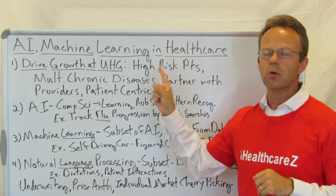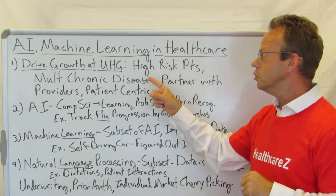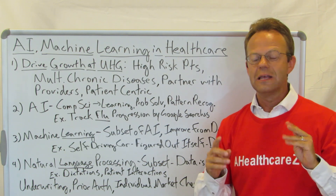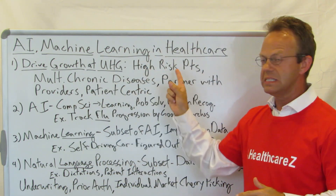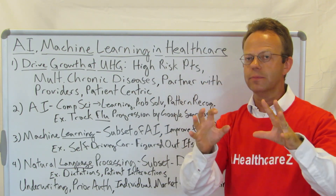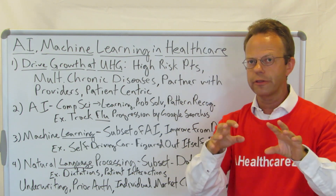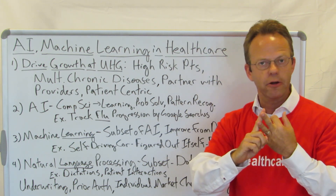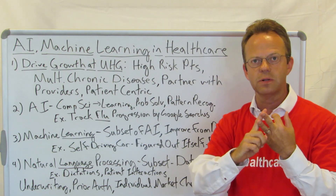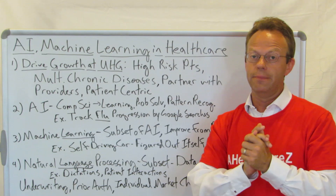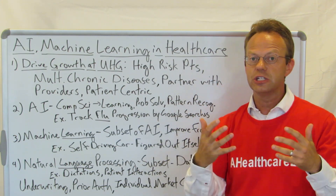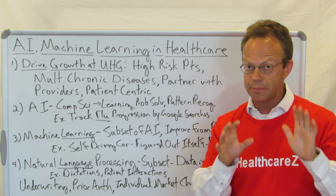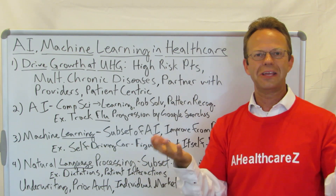Here's my challenge with the specific motivation for UHG to use AI and machine learning for high-risk patients, multiple chronic diseases, partnering with providers, and patient-centric care. All of this could create the ability to do these things, but to actually carry out, implement, and execute on improved healthcare and improved health, it requires behavior modification on the part of the patient, the doctor, and other caregivers like nurses, speech therapists, and physical therapists. Given the low degree of credibility that health insurance companies have with patients, I'm not sure that these initiatives will be successful until that credibility problem is solved.